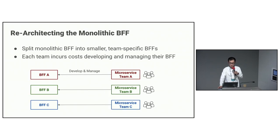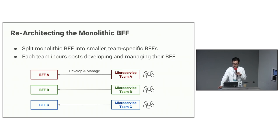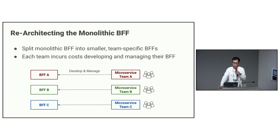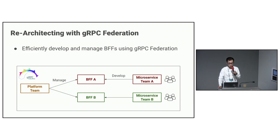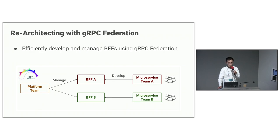To address this issue, we started a BFF architecture project and decided to break down the monolithic BFF. The goal was to have each microservice team create and manage their own BFFs based on their responsibilities. However, this new structure introduces the cost of creating and managing the BFFs by the microservice teams themselves. So to alleviate that burden, we decided to develop an open-source software called zRPC Federation to automate as much of the process as possible. In the new architecture, the platform team is still primarily responsible for managing the BFFs, but zRPC Federation makes this process much more efficient.